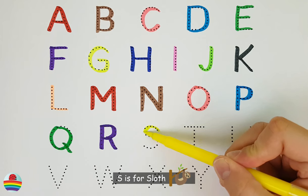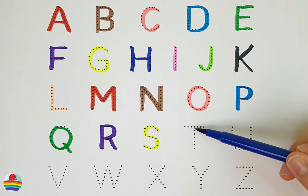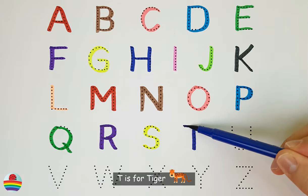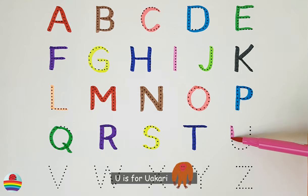S. S is for sloth. S. T. T is for tiger. T. U. U is for uakari. U.